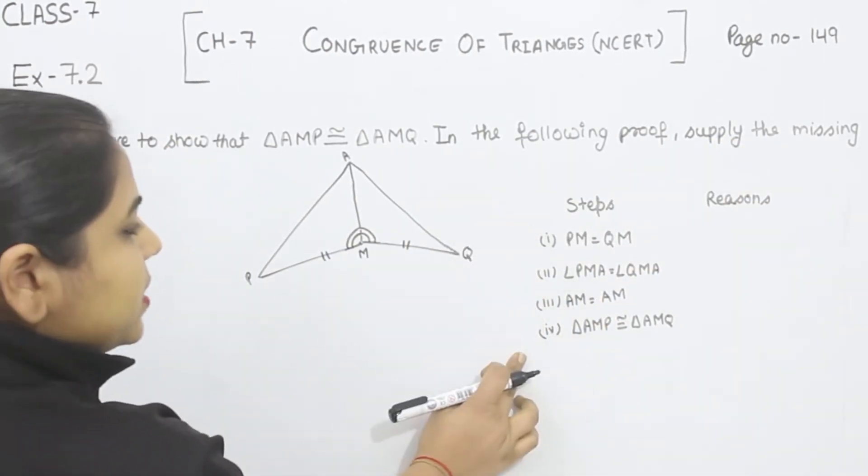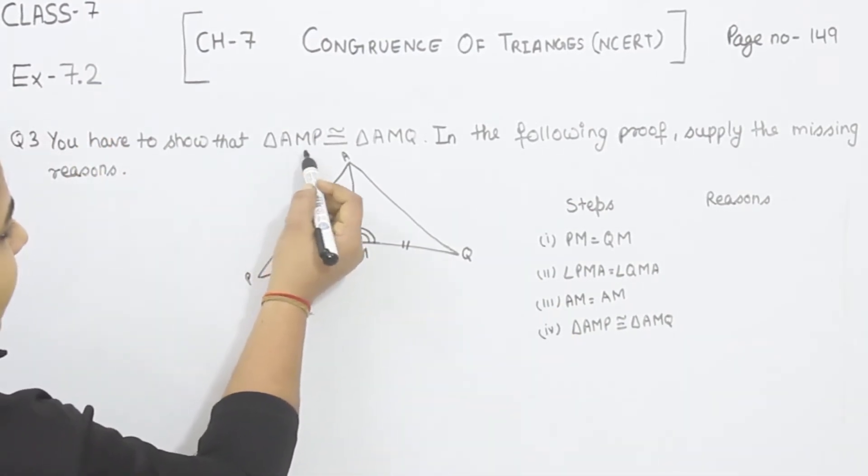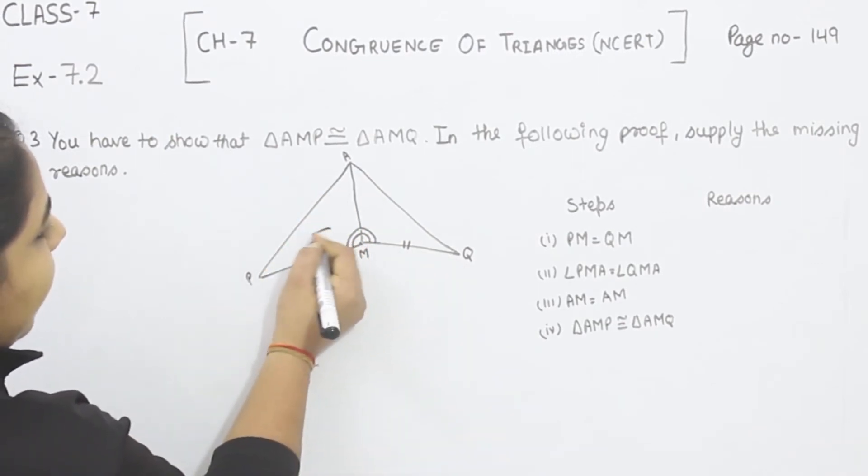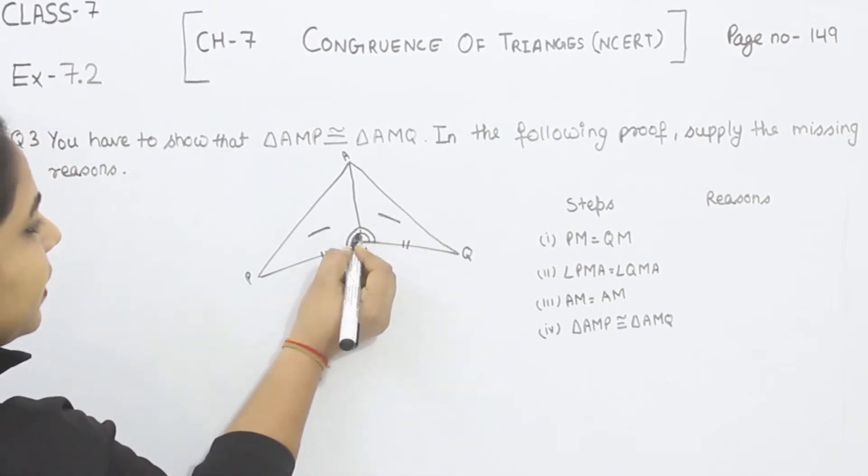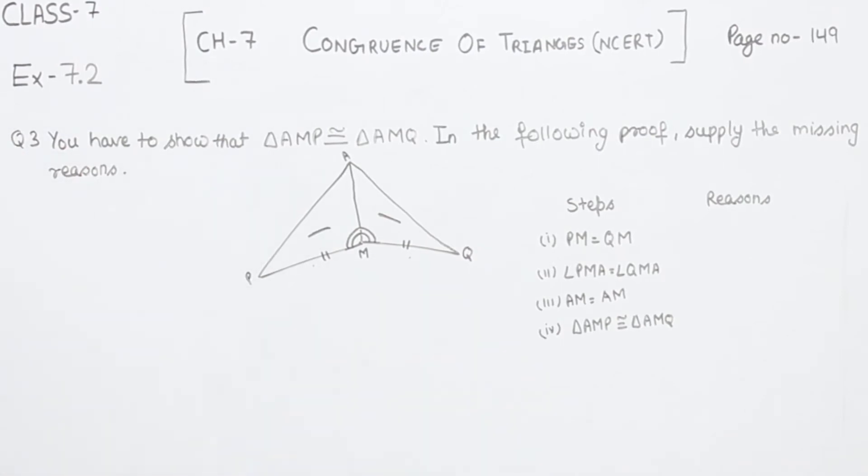So this one is the part given to us. We have to tell the reason. Now we are having two triangles, triangle AMP and triangle AMQ. In this one, it is given that this angle is equal to this one and this side is equal to this side.